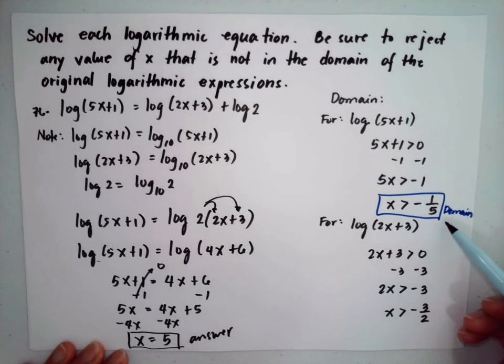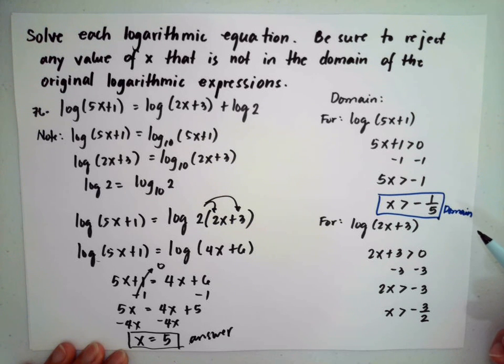Which agrees with our domain. It is greater than our condition of negative 1 over 5.